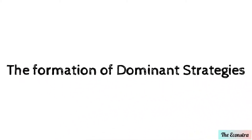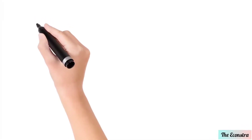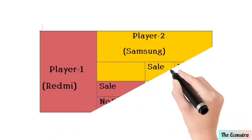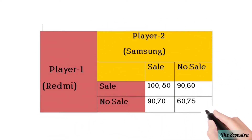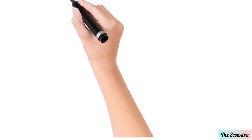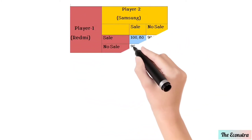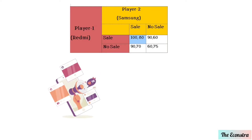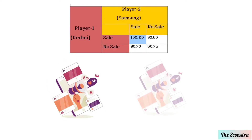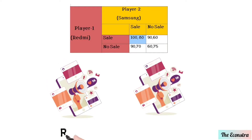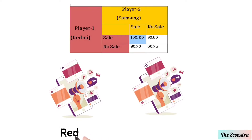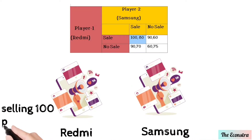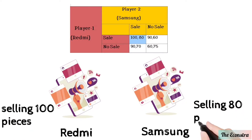Now the formation of the dominant strategy using a chart: Player One is Samsung and Player Two is Redmi. In the first condition — both players on sale — Player One sells 100 goods and Player Two sells 80 goods.